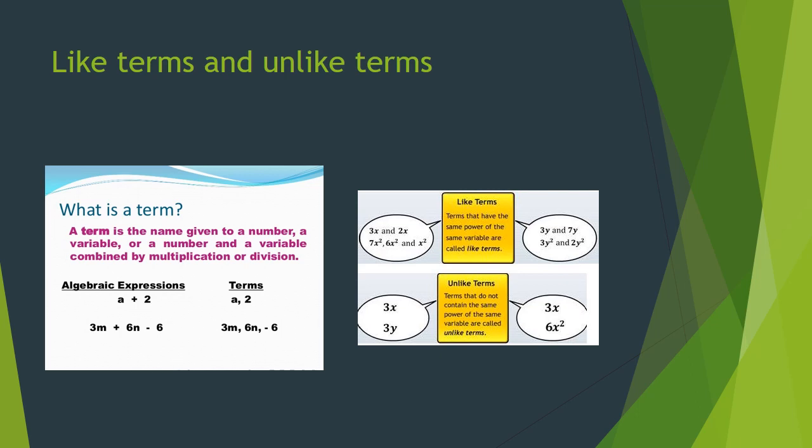Term: a term is a name given to a number, a variable, or a number and a variable combined by multiplication or division. So, in the algebraic expression a plus 2, the terms are a and 2. In 3m plus 6n minus 6, it contains 3 terms: 3m, 6n and minus 6.